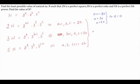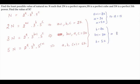Similarly for b: b must be even (multiple of 2), b+1 must be a multiple of 3, and b must be a multiple of 5. So b must be a multiple of both 5 and 2, meaning a multiple of 10. Checking multiples of 10: 10+1 = 11 is not a multiple of 3. Next: 20+1 = 21, which is a multiple of 3. So b = 20.